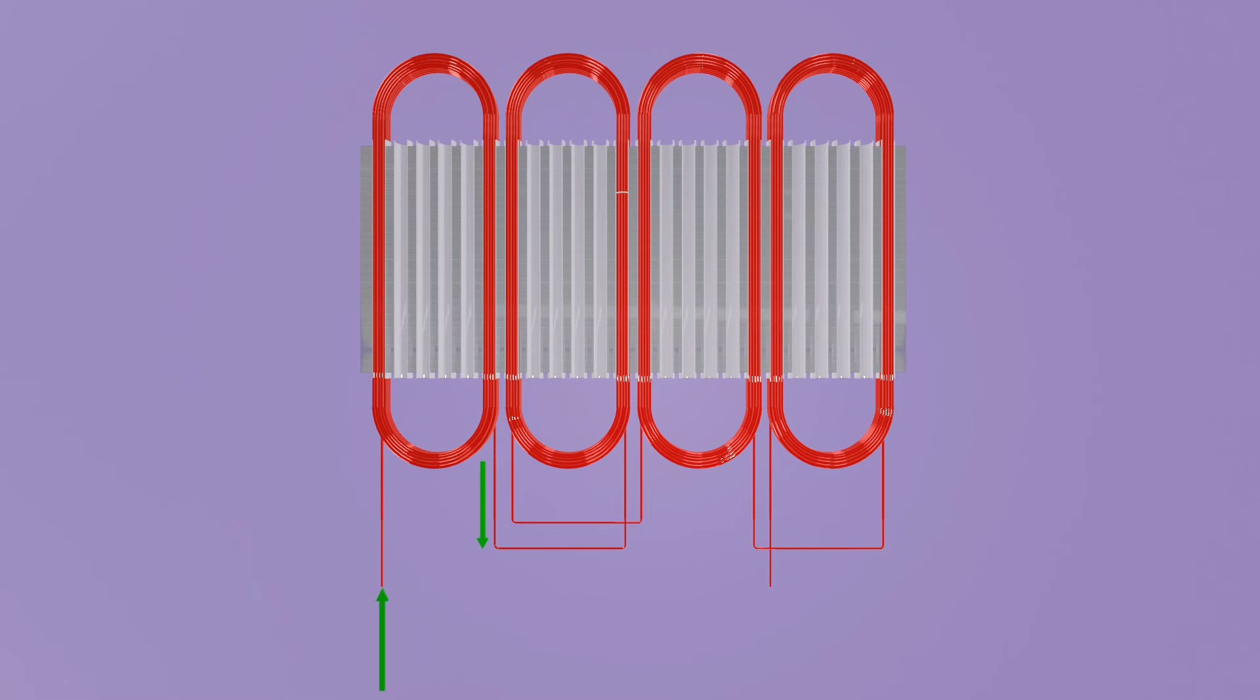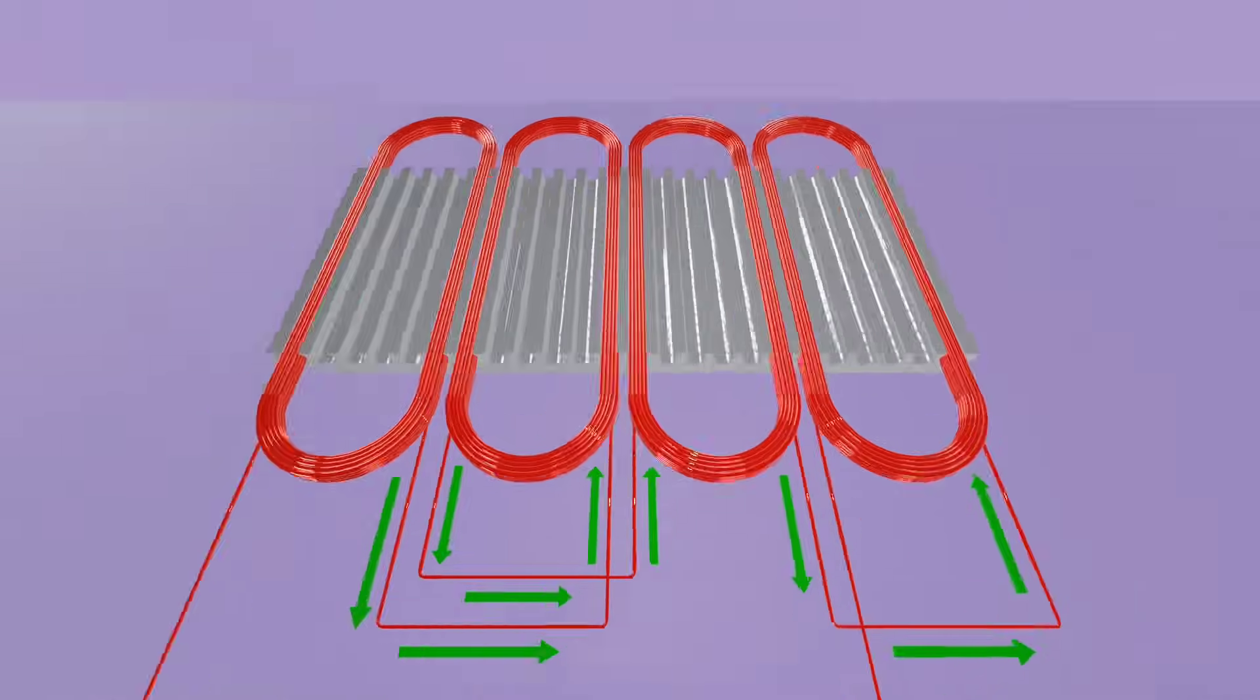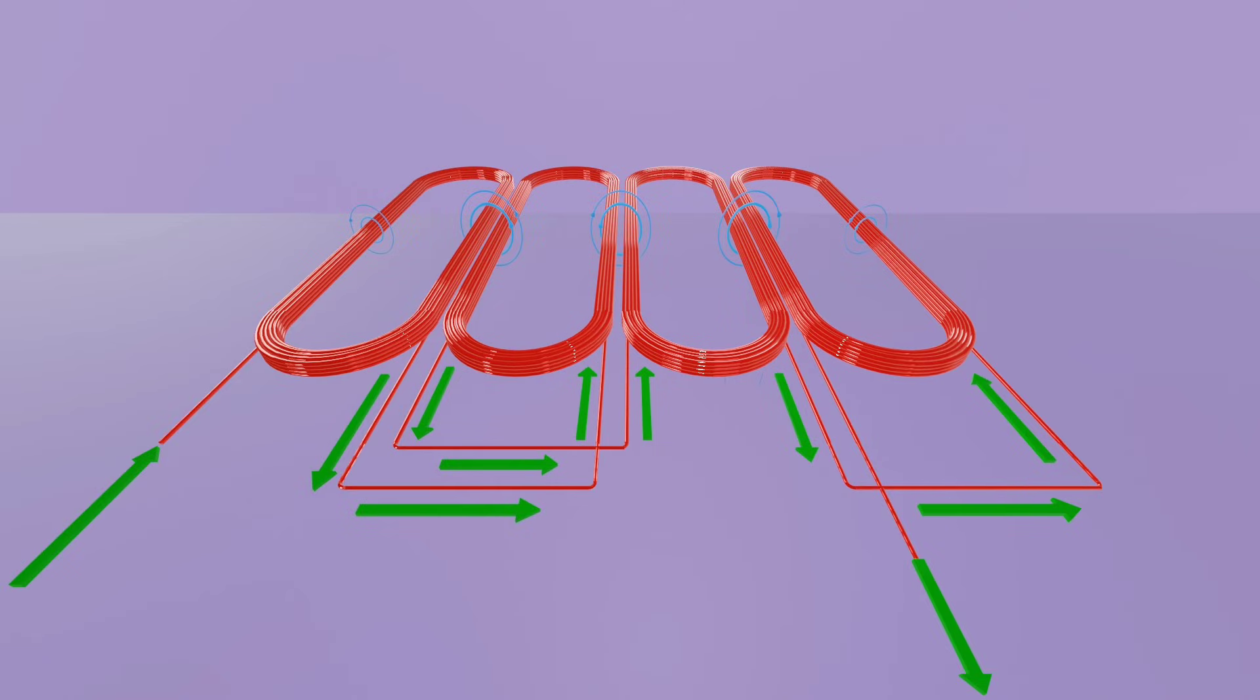When we flow current through this coil, the current flows from the first coil to the fourth coil of the winding, according to coil connections. This current produces a magnetic field around each coil according to its path and current direction, and makes north and south poles like a bar magnet.